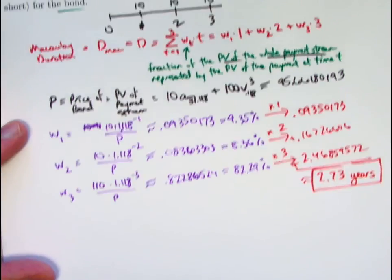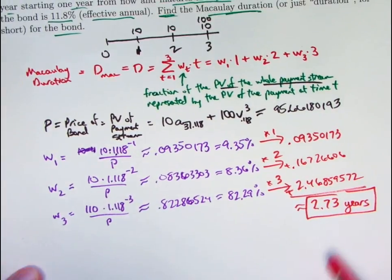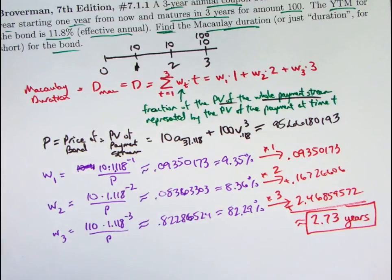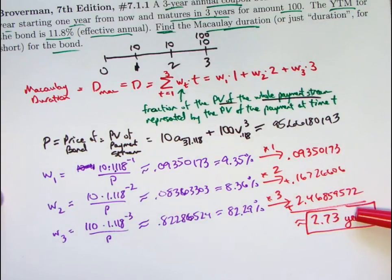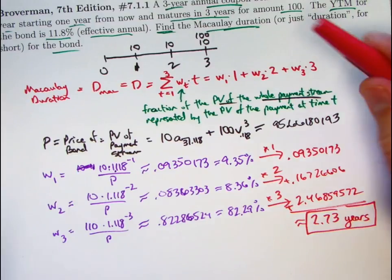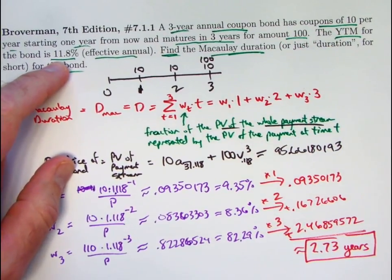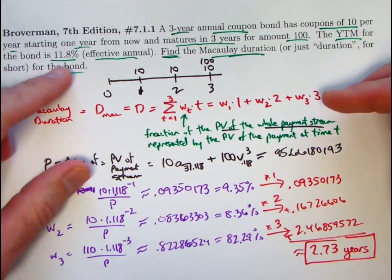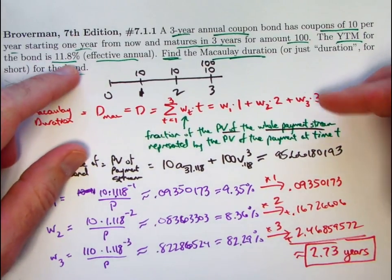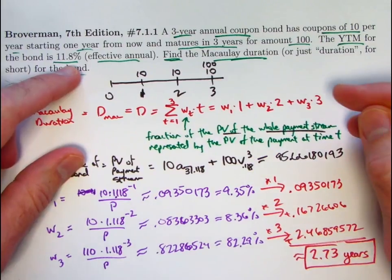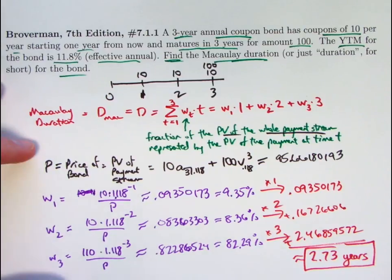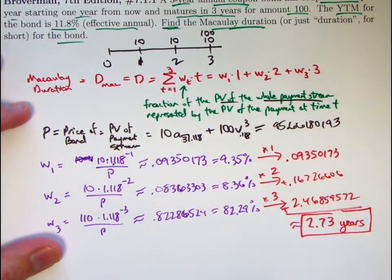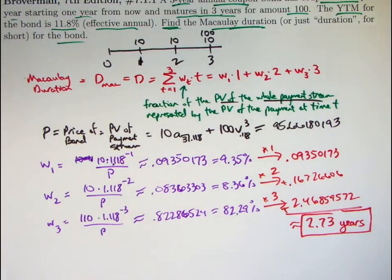Again, the Macaulay duration, or just duration for short, is a weighted average of times of payments. You should include units, in this case, units of years. The largest payment is at time 3, so in a sense we should expect it to be at time 3. However, you've got to be careful, because if the interest rate was a lot higher, for example, 40 or 50 or 60 percent, it's totally unrealistic, but then the discount factor would be much smaller, and this would be less weight in a sense, and we would expect a lower Macaulay duration. But in this case, it's pretty close to 3, and that is the idea of Macaulay duration.